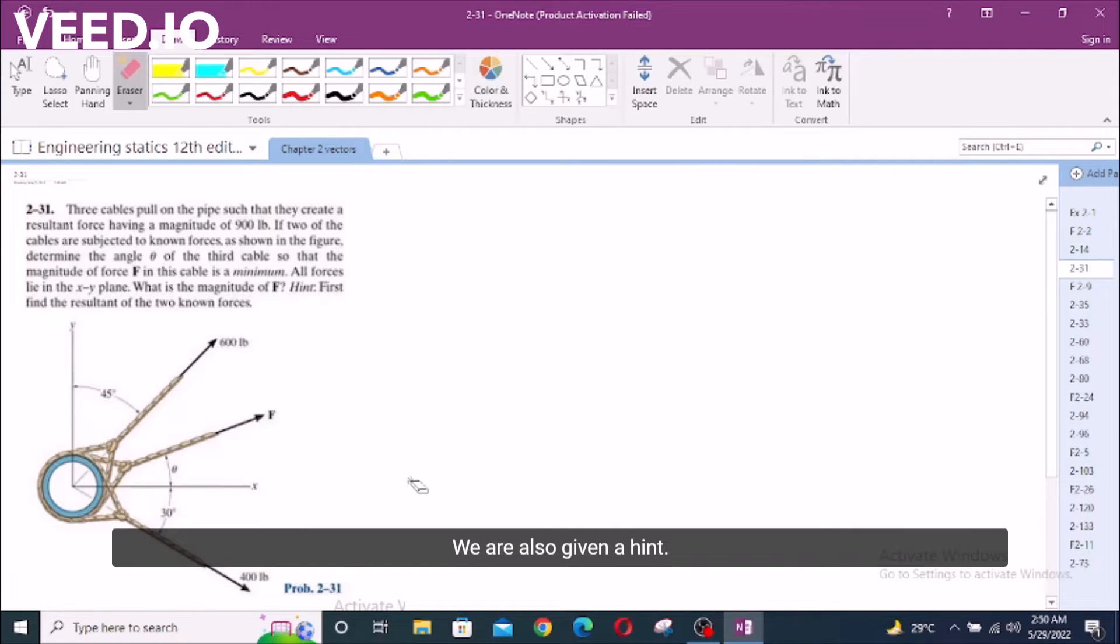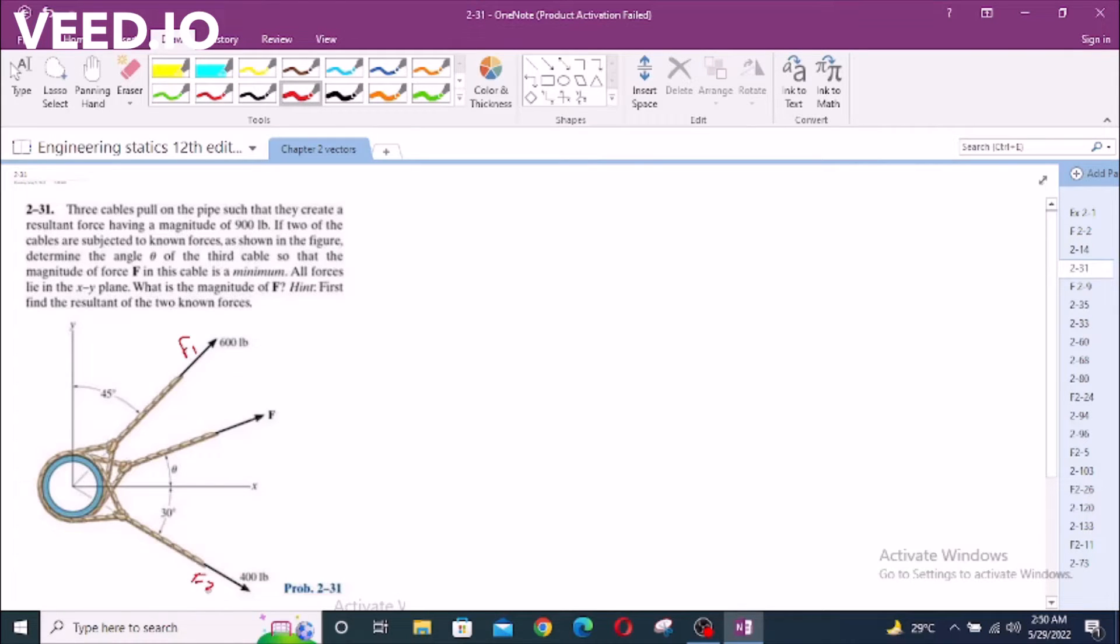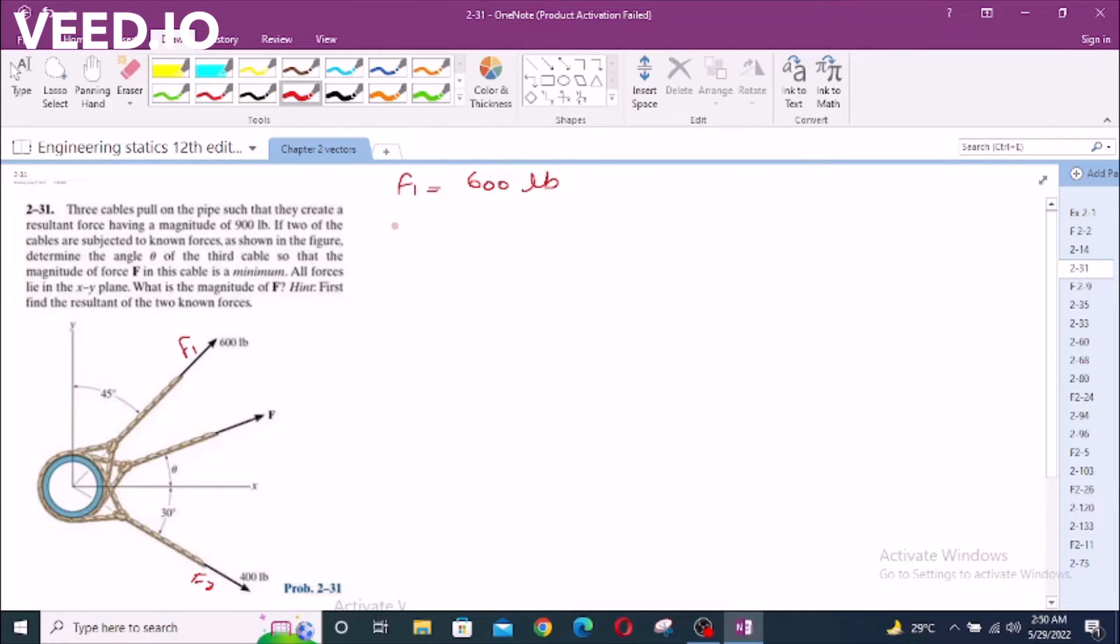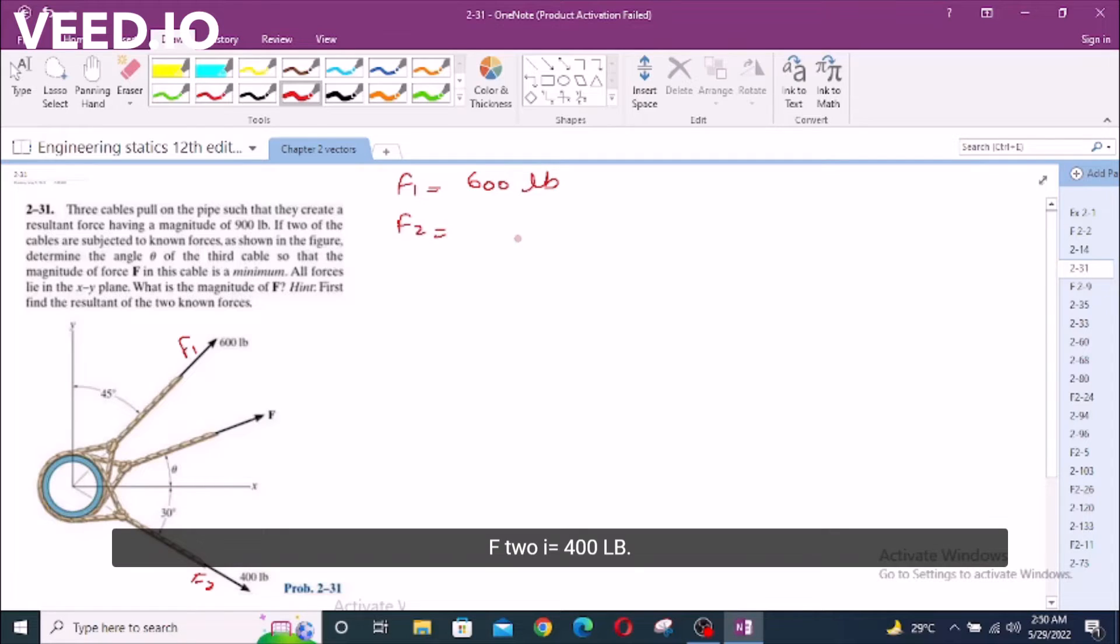We are also given a hint: first find the resultant of the two known forces. The two known forces are, let's call this F1 and F2. F1 equals 600 Lb, F2 equals 400 Lb.